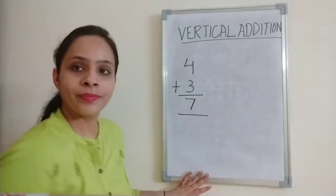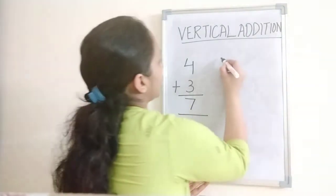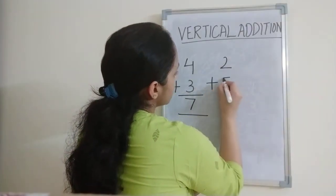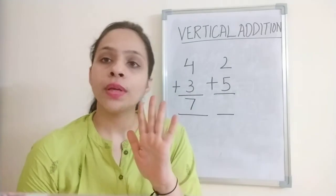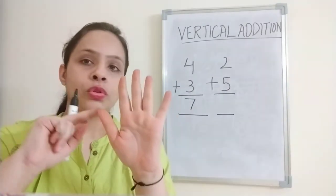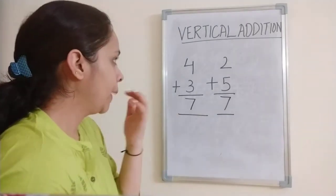Similarly, suppose here 2 plus 5. The upper number you keep fixed in your mind. So 2 is fixed in my mind and now how many fingers I have to use? I have to use 5 fingers. What comes after 2? 3, 4, 5, 6, 7. So 2 plus 5 equals 7.